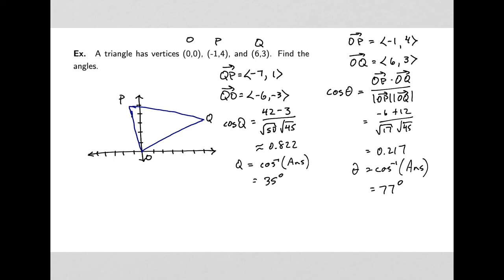Finally, figuring out what that angle P is, we're just going to do 180 minus 35 and minus 77, which will turn out to be 68 degrees. That's always quick. Thank you.